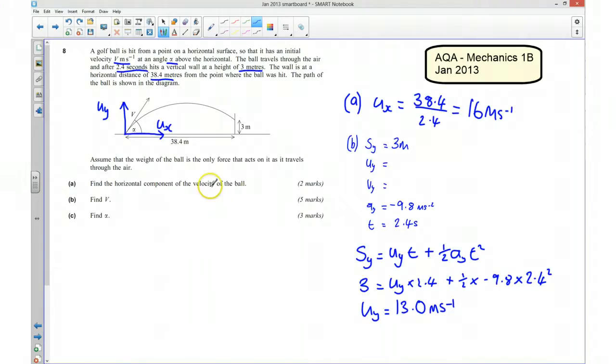So what we now need to do is we need to use this to find out what V is, which is the speed in this direction. So I know that this is 16 metres per second and this is 13.01 metres per second, so I can use Pythagoras to work out what this is here. So my V is going to be equal to the square root of 16 squared plus 13.01 squared, and that works out to be 20.6 metres per second.